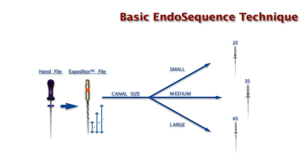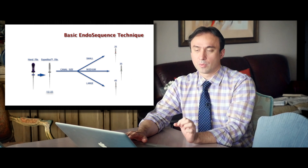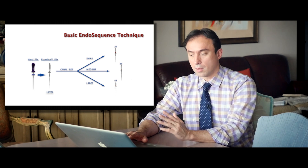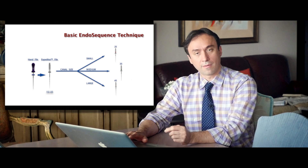We also reconsidered the expediter file — previously just a screening file — asking: why not use it more positively as the first shaping file, giving the canal a predefined shape from which we could drive a corresponding finishing file? We found that a size 15/05 worked very well — a 15 tip that is fairly strong, with an 05 taper that sits between the 04 and 06 tapers, robust yet not too aggressive. We start the case with a 15/05 shape, then drive either a small, medium, or large ESX finishing file — sizes 25, 35, or 45 — down to the apex.